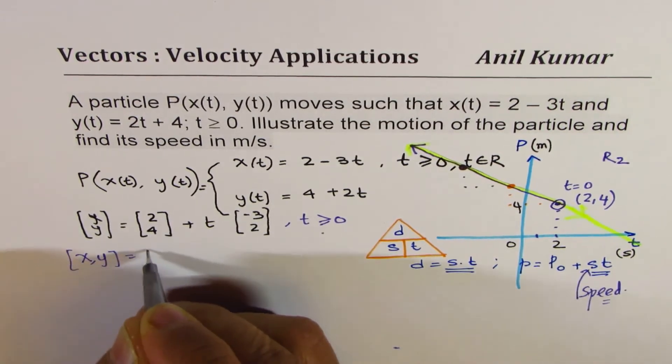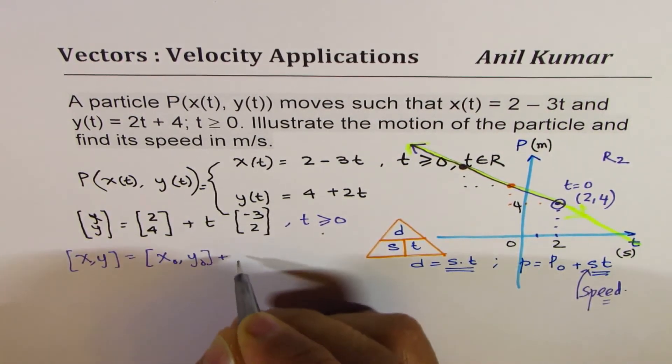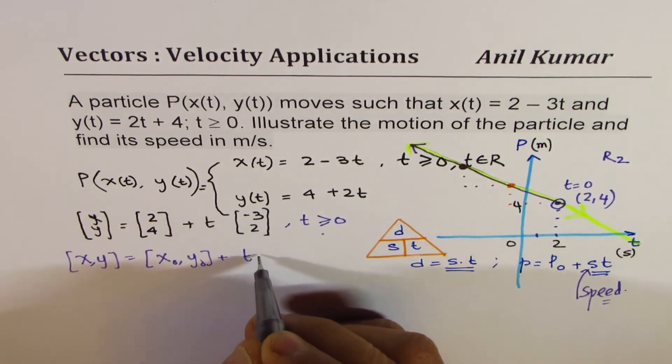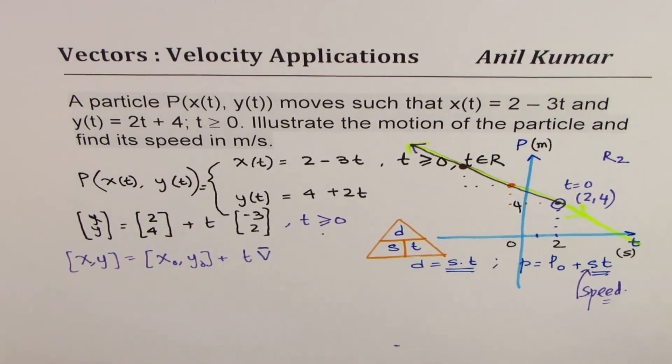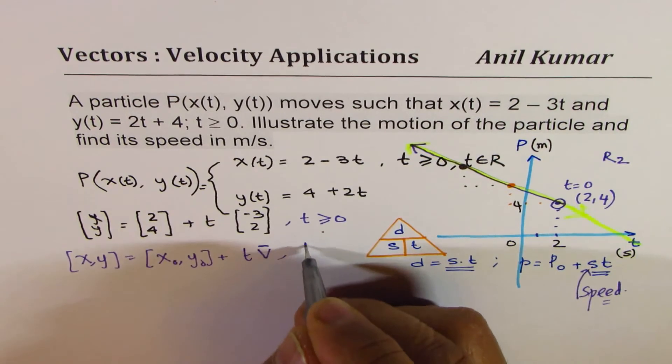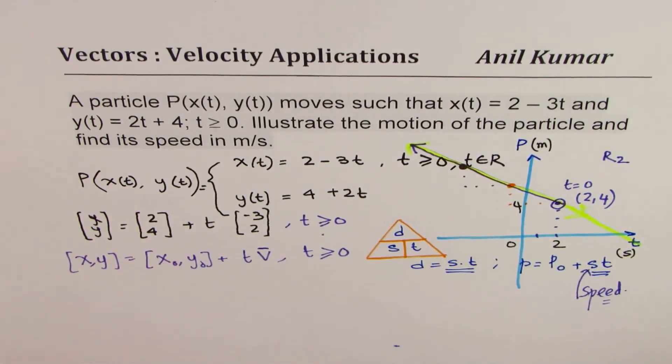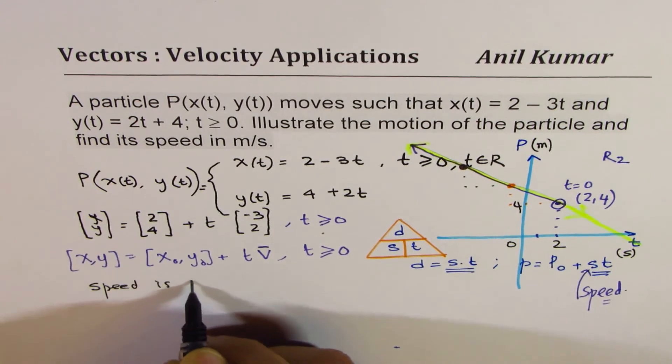If you compare this equation, you would always write this as any position (x, y) is given as initial position (x0, y0) plus t times—and since this is also direction—I'll call this the velocity vector. In this case, time is greater than or equal to 0. This is the velocity vector.